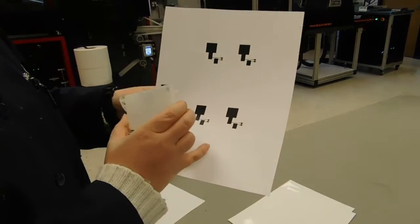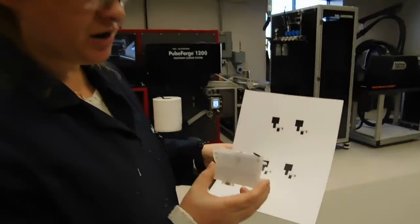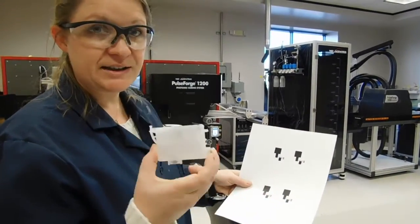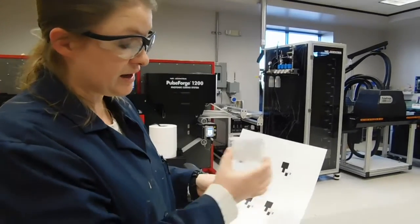Whatever color this image is going to be is going to come out of the corresponding cartridge. Therefore if we design and print in black, whatever is in this cartridge, i.e. the silver ink, is what will be printed.